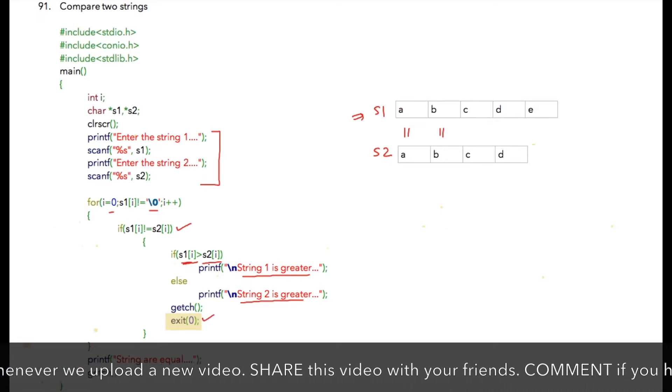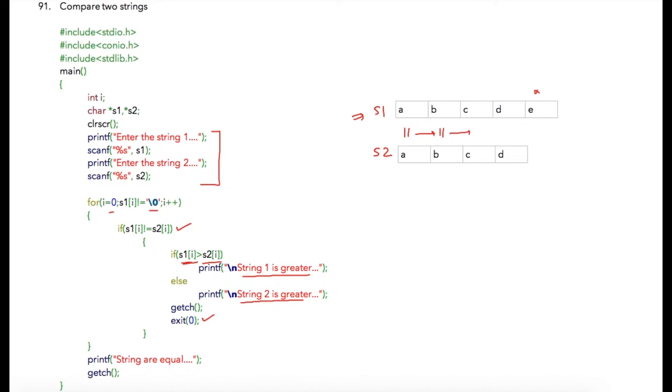But if those are equal, then we'll move on to check the next character, and the next, and so on, until we reach a point where characters are not equal. Suppose both strings were 'a b c d', then 'e' is not present. Until the time we reach 'd', this condition has not been true. Hence, after that, the for loop will get completed because we will reach slash zero after letter 'd'.